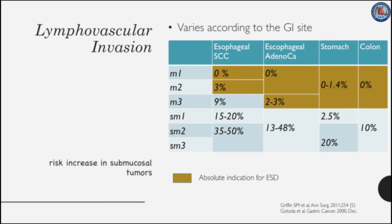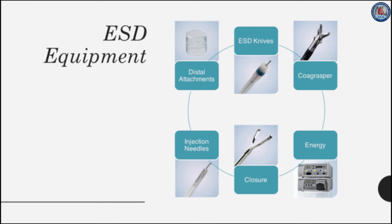As shown in this table, esophageal squamous cell carcinoma has almost 0% risk of lymphovascular invasion if it is an M1 tumor, and up to 50% if the lesion is submucosal or in the deep submucosa. For esophageal adenocarcinoma, mucosal tumors have a very low risk of lymphovascular invasion — less than 3% — and once the lesion is deeper in the submucosa, that risk can increase up to 40%. For that reason, the absolute indication for ESD in esophageal lesions is a lesion confined to the mucosa.